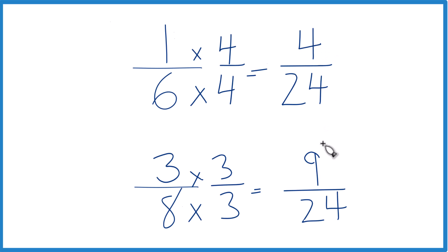So 9, that's greater than 4. That means 9/24 is greater than 4/24. And since these are the same, and these are the same, we can say that 3/8, that's greater than 1/6.